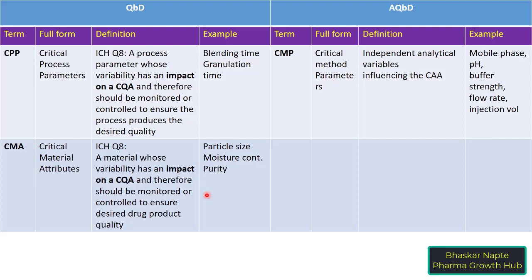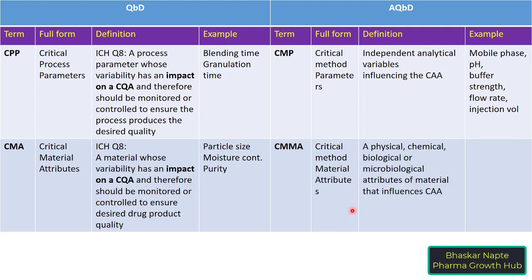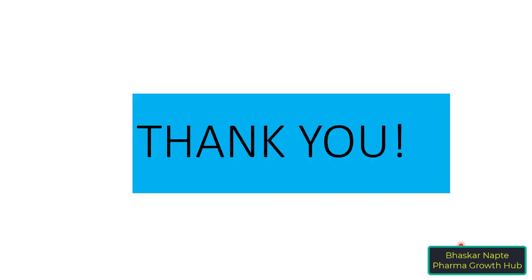The equivalent term in AQBD is CMMA, or Critical Method Material Attributes — a physical, chemical, biological, or microbiological attribute of a material that influences the CAA. This relates to the quality of reagents or solvents used during analysis. Examples include the purity of reagents, the column stationary phase, and the types of glassware used, all of which can influence critical analytical attributes like resolution, retention time, or plate count.